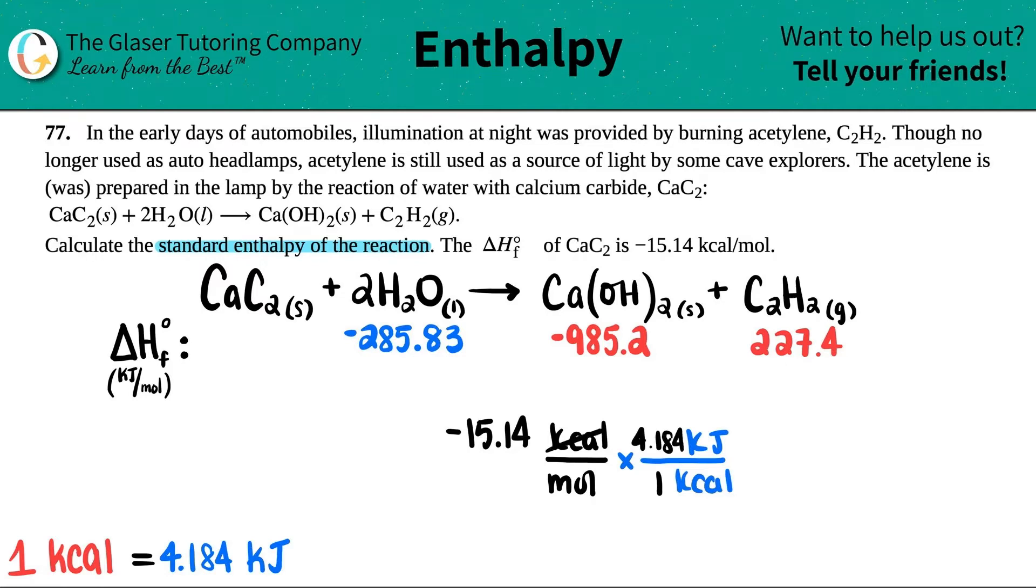Cancel out the kilocalories, and now we have kilojoules. So let's see. Negative 15.14 times 4.184. I'm going to cut it off after a couple of decimals, but it's negative 63.35. And now that's kilojoules per mole. That's the number that I'm going to put over here. So under the CAC2, I'm going to say that this is negative 63.35.